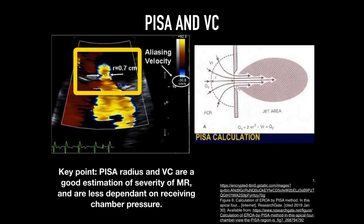Vena contracta, represented by the two arrows, is the narrowest portion of the colored jet and shows up as laminar or non-turbulent flow. It correlates to orifice size and degree of severity of MR. The vena contracta can be quite technically challenging to obtain because it requires finding an area of flow that is laminar and is the narrowest portion of the jet. It usually appears below that concentric shell variation, but if your orifice is not perfectly round, it can be very hard to find that narrow portion.